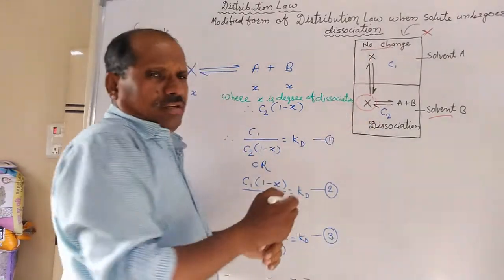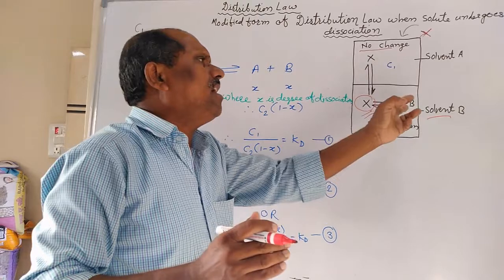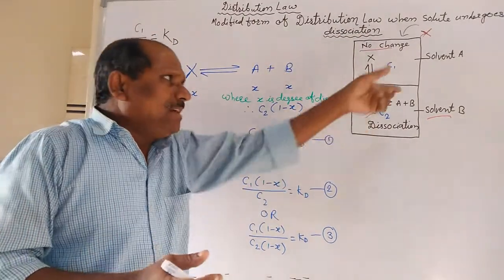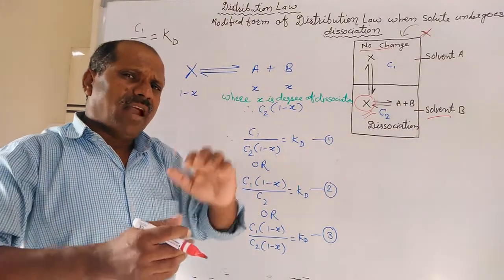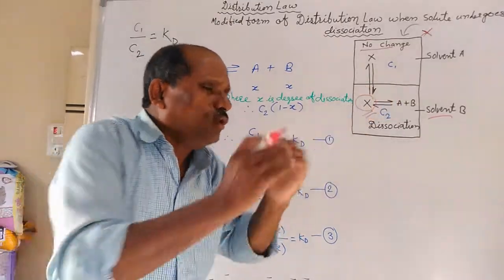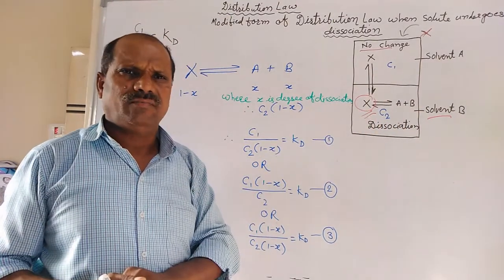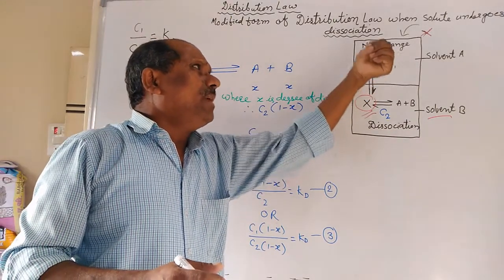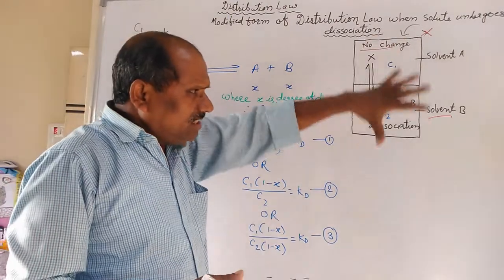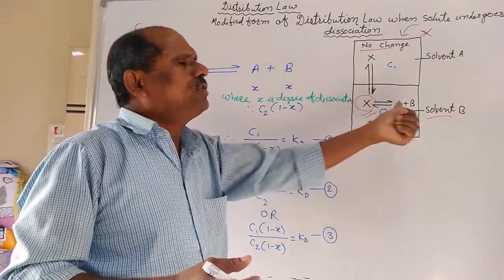Some molecules of solute X remain in the normal condition and some molecules get dissociated, forming A and B type molecules. So solute X, when added into the immiscible liquid pair having solvent A and solvent B, shows dissociation in solvent B. X dissociates forming A plus B type molecules, while solute X molecules remaining in solvent A are unchanged and in a normal state.